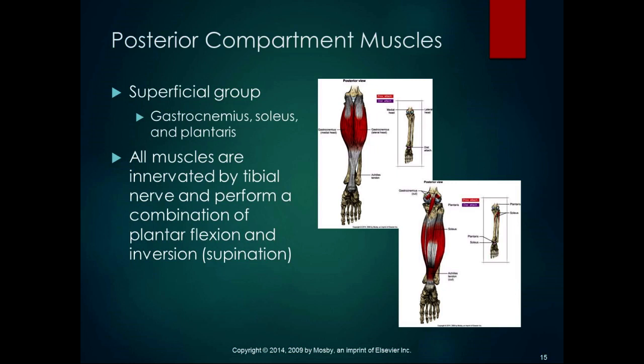The plantaris is a tiny muscle with a really long tendon, inserting on the lateral supracondylar line of the femur. It's a weak assistant in knee flexion and ankle plantar flexion and doesn't contribute much overall. Because it's long, it doesn't provide a lot of stabilization either. When you have big muscles like the gastroc and soleus, they're going to do most of the work. The plantaris also gets the tibial nerve.